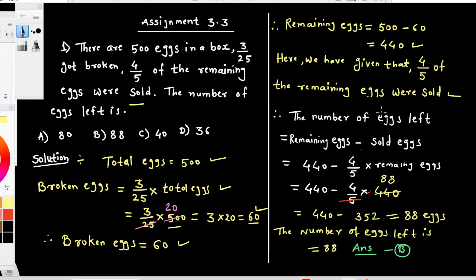Remaining eggs minus sold eggs: 440 minus 4/5 multiplied by 440 is equal to 440 minus 4/5 multiplied by 440. The sold eggs is 352.